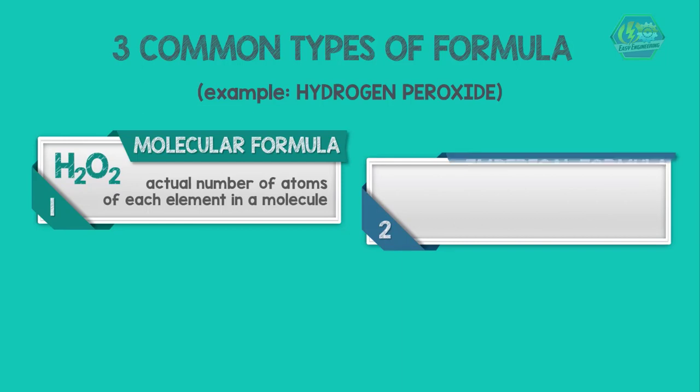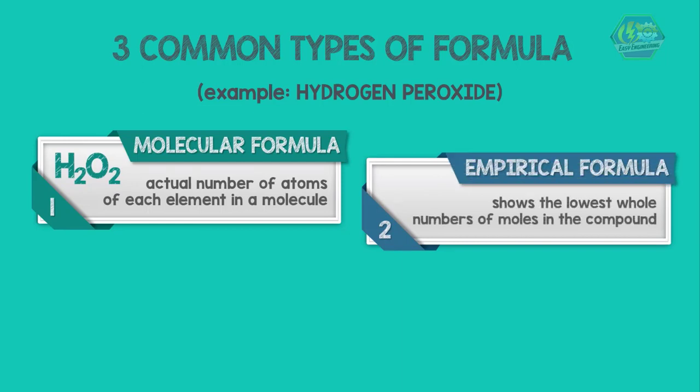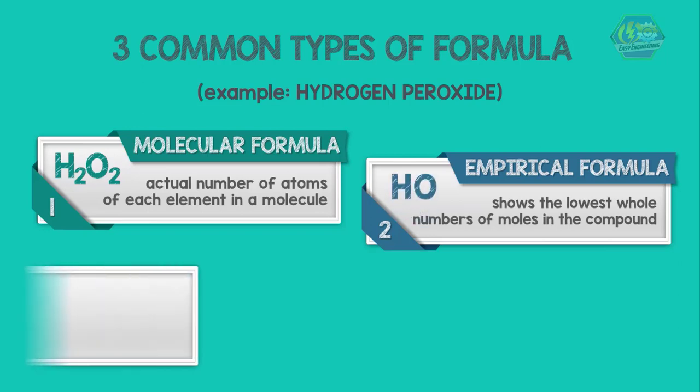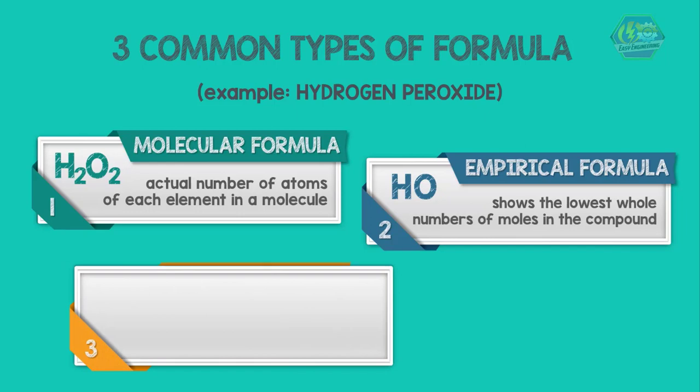The second one is the empirical formula. It shows the lowest whole numbers of moles and the relative numbers of atoms of each element in the compound. Thus the empirical formula is HO.